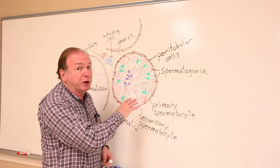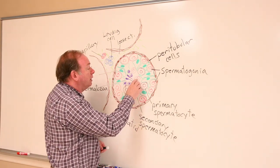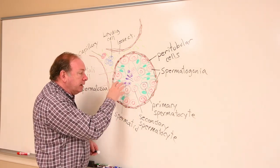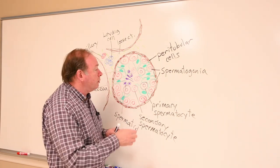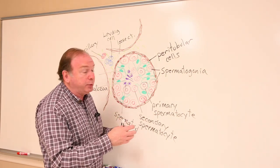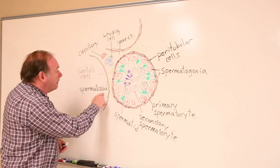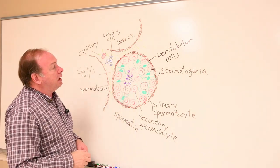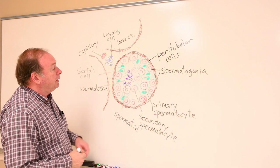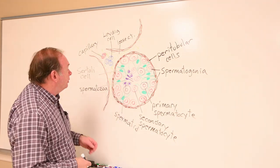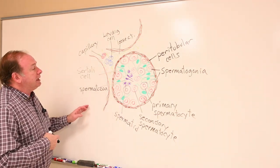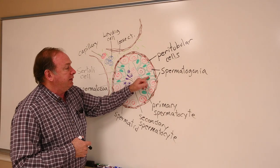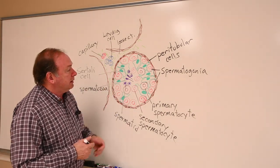Those cells will then undergo another division, the second meiotic division, to form spermatids. They are in their final division stage and won't divide again, but they undergo a change of shape to become sperm or spermatozoa. Spermatozoa occupy the very center of a seminiferous tubule, from where they'll be able to travel down through the tubule leading out of the testis. Sertoli cells are support cells that have a number of different roles within the testis.